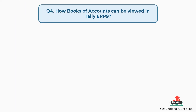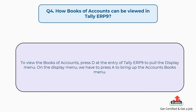Question number four: how can books of accounts be viewed in Tally ERP9? To view the books of accounts, press D at the entry of Tally ERP9 to pull the display menu. On the display menu, we have to press A to bring up the accounts books menu.